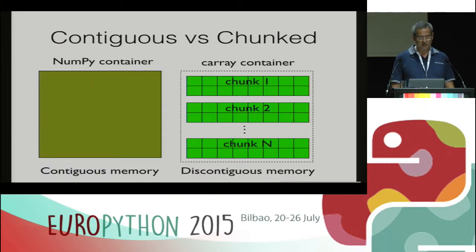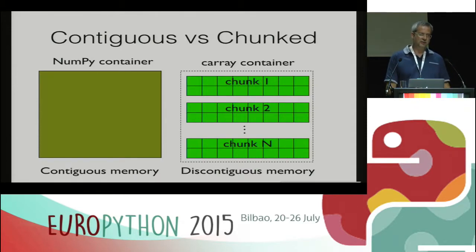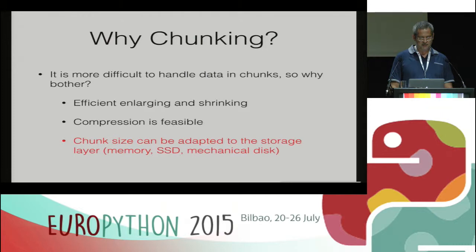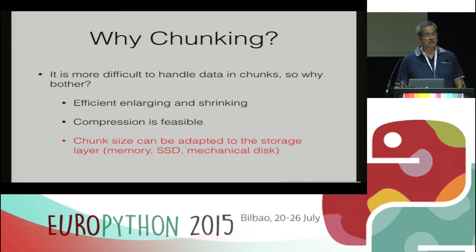I am going to skip some slides because I am a little bit short of time. The important thing I want to transmit will be the consequences of using these containers. Chunking is nice because it allows efficient enlarging and shrinking, compression is feasible, and the chunk size can be adapted to the storage layer — depending on which storage layer you are using, the chunk size should be different. A chunking storage allows you to fine-tune the chunk size for your own needs.